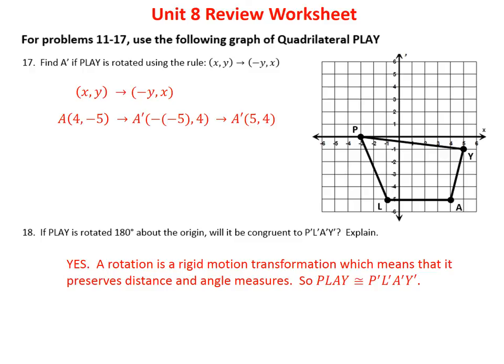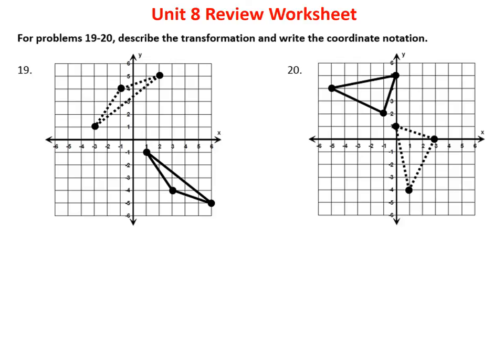Number 18 asks: what happens if PLAY is rotated 180 degrees around the origin? Will it be congruent? A rotation uses (x, y) → (−x, −y). The key question is whether it's congruent — and yes, because a rotation is a rigid motion transformation. It preserves distance and angle measures, so figure PLAY is congruent to P prime L prime A prime Y prime. This is one of those test questions: any translation, rotation, or reflection preserves congruence.